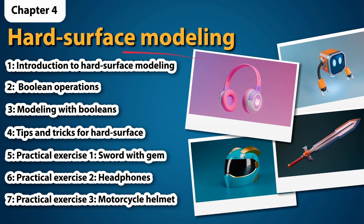In the fourth chapter, we delve into hard surface modeling, which is essential for creating objects with rigid or manufactured surfaces. Here, we are going to learn technical aspects such as geometry flow and support loops. We will also look at techniques such as Boolean operations, the use of bevel, as well as some secrets to make your life easier with this type of modeling. This chapter is ideal for learning to work with precision and create mechanical or industrial objects, putting these concepts into practice with the models shown on screen.